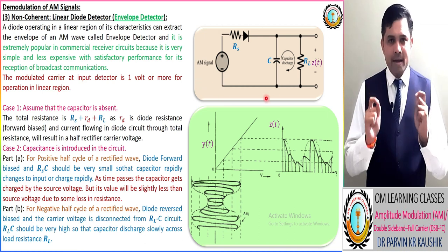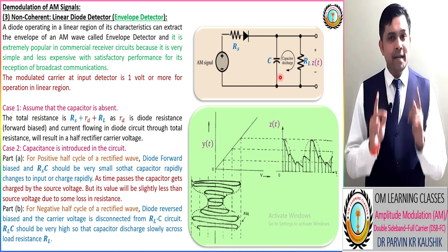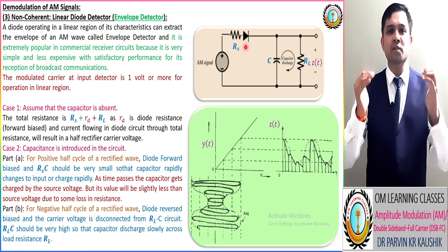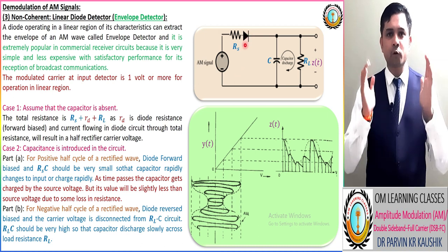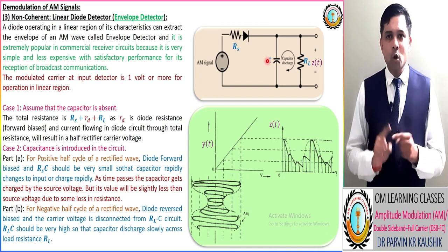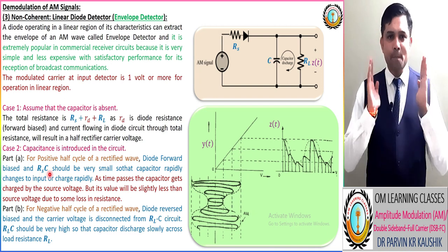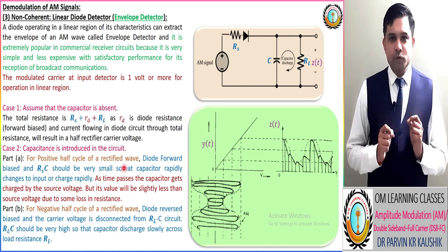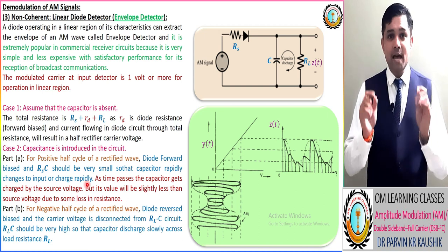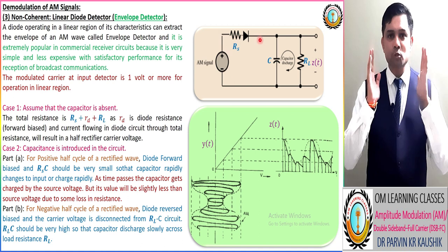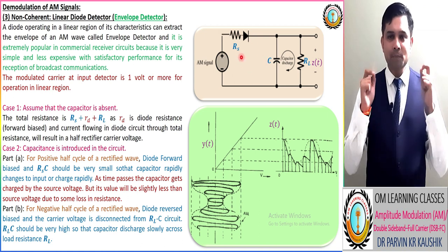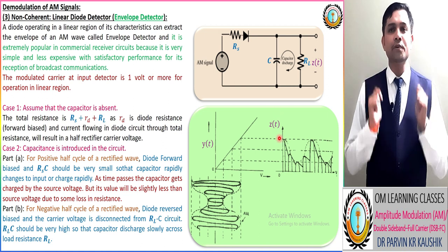Now we consider this diagram and introduce the capacitor in the circuit. It has two parts. Part A corresponds to the input when it is operated with the positive half cycle. In that, the diode gets forward bias and behaves as a short circuit, and the time constant RS times C should be small so that the capacitor rapidly charges corresponding to the input signal. The value of RS times C should be small — this is very important — because as time passes, the capacitor gets charged by the source voltage, but its value is slightly less than the source voltage due to some loss from the resistance.